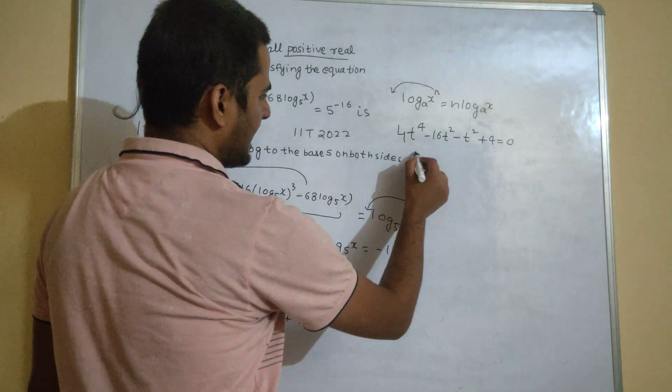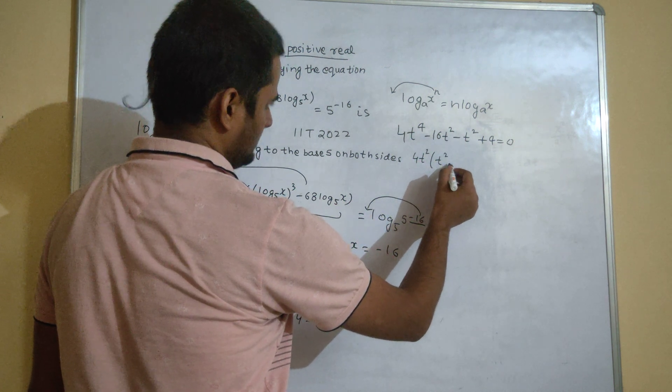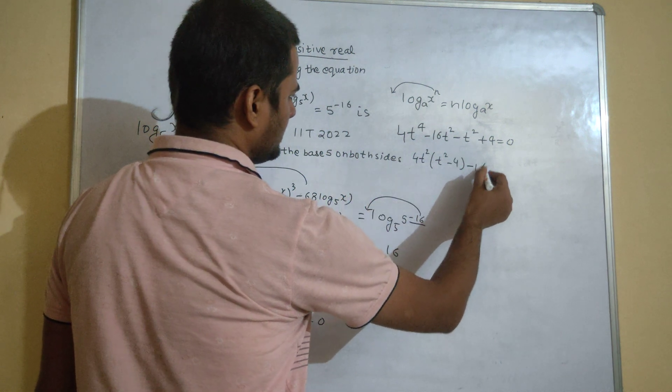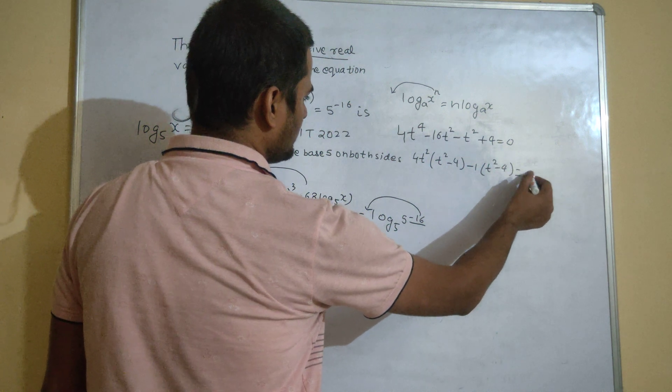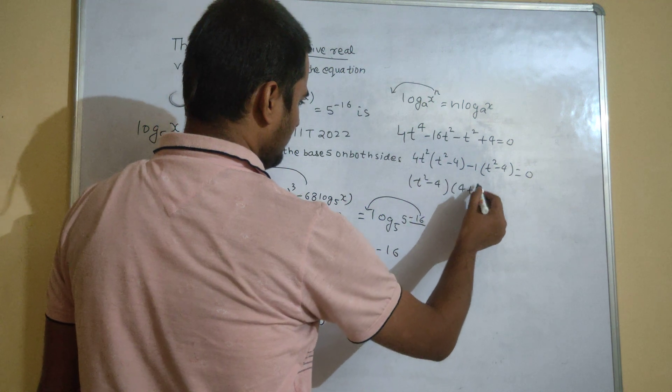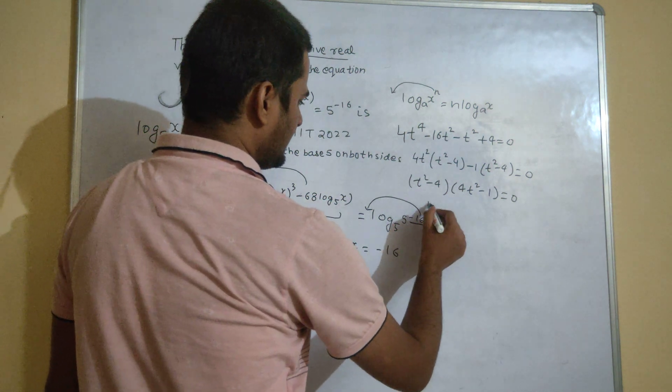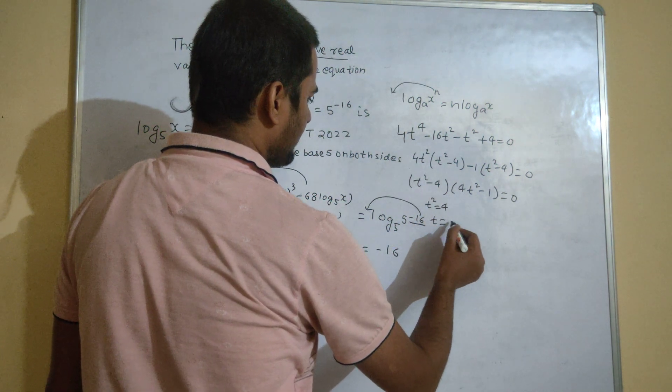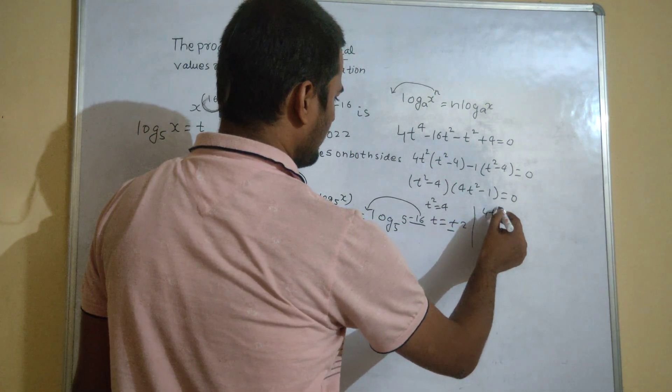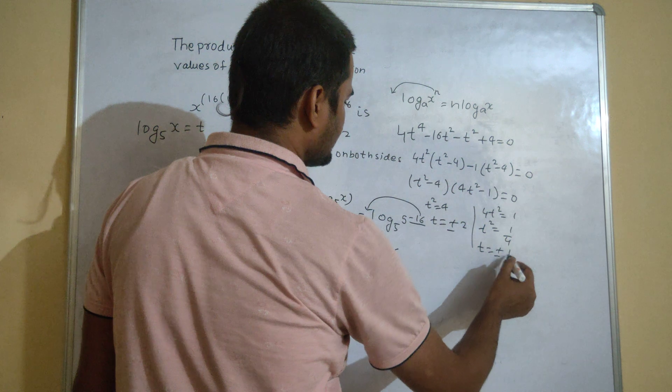Now, 4 t power 4, I can take 4 t square common from the first two terms, so 4 t square times t square minus 4, and minus I can take common, I will get t square minus 4, this equals to 0. So, here t square minus 4, so t is plus minus 2, 4 t square equals to 1, so t square is 1 by 4, t is plus minus half.